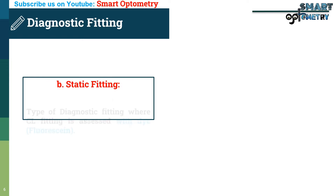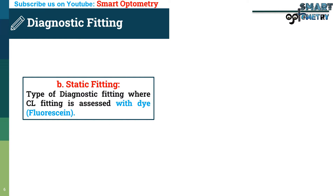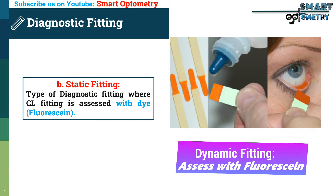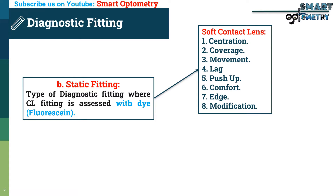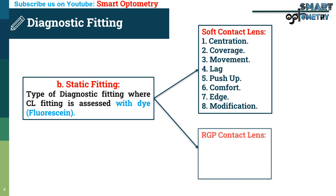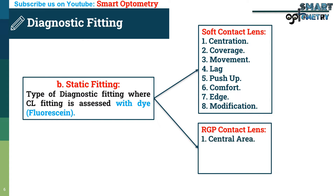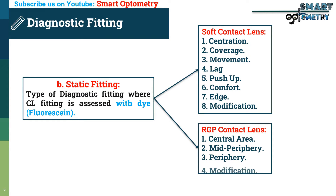Static fitting is a type of diagnostic fitting where contact lens fitting is assessed with a dye, like fluorescent dye. Static fitting of soft contact lenses is avoided because soft contact lenses can take the color of the dye. But if done, the same parameters are assessed as in dynamic fitting. In static fitting of RGP contact lenses, we assess the following parameters: 1. Central area, 2. Mid-peripheral area, 3. Peripheral area, 4. What modifications are needed to get the optimal fit.